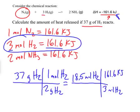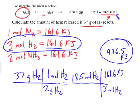I'm just going to multiply this out. So I'm going to do 18.5 times 161.6 divided by 3. That's going to give me 996.5 approximately. Which is about six times that amount. So that is how much heat is going to be released when 37 grams of hydrogen reacts.